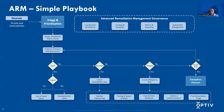Let's walk through a simple remediation playbook to highlight how the ARM methodology is implemented. Start with sources of vulnerabilities — triage and prioritize them using a risk-based approach. Once you have a prioritized list, assign findings to a task owner. That owner or group performs a technical risk assessment: how can they remediate this? Is it patchable? If not patchable, move to the remediation decision box.